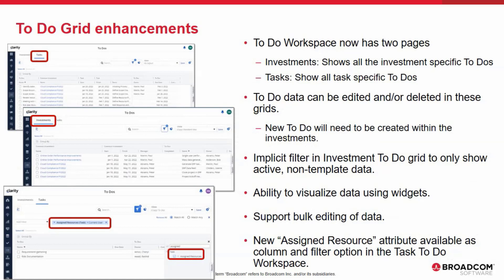The To-Do workspace has been enhanced. When the end user goes to the To-Do workspace, they will see two pages: the first is the Investment page, which shows all the investment level To-Dos only; the second is the Task page, which shows all task-defined To-Dos. The To-Do data from these two pages can be edited and deleted; however, to create a new To-Do, the user must do that within the investment itself. There is an implicit filter applied in the investment level To-Do where it only displays data from active and non-template investments. The grids support bulk editing, and there is also a new attribute — the assigned resource — that can be included in the task grid.